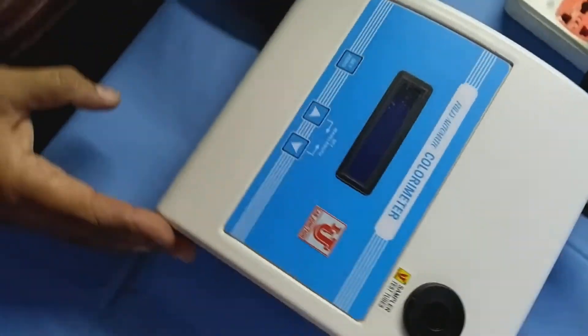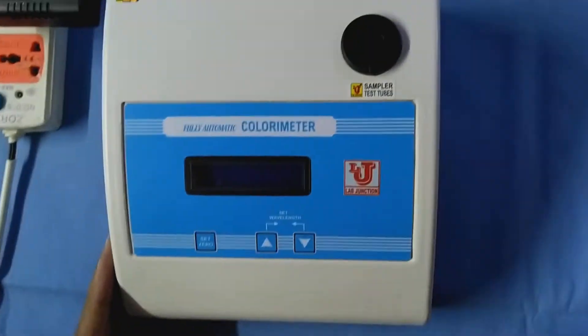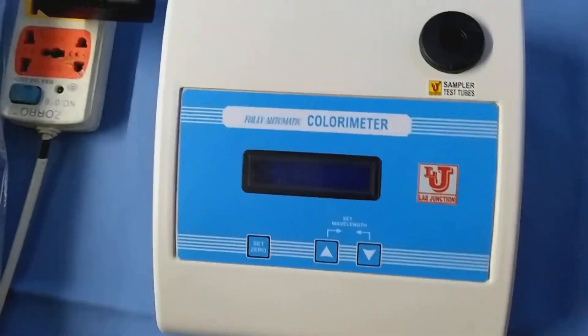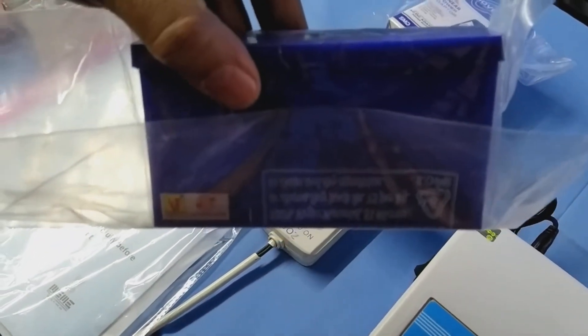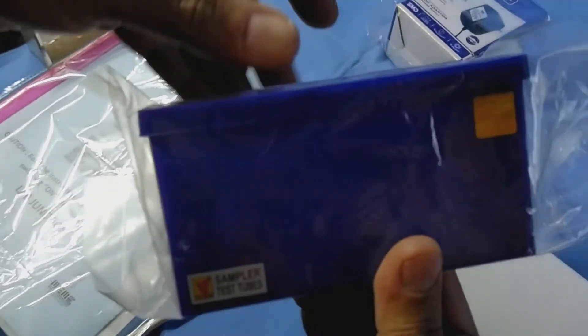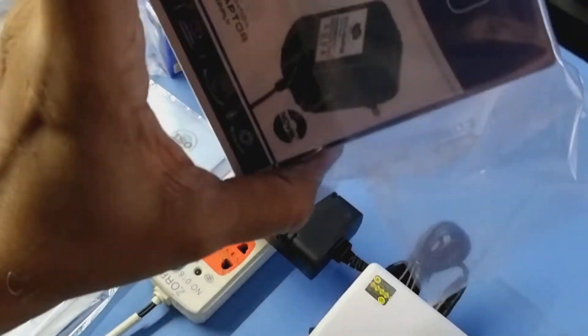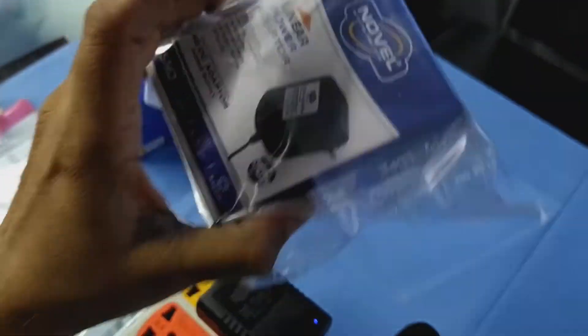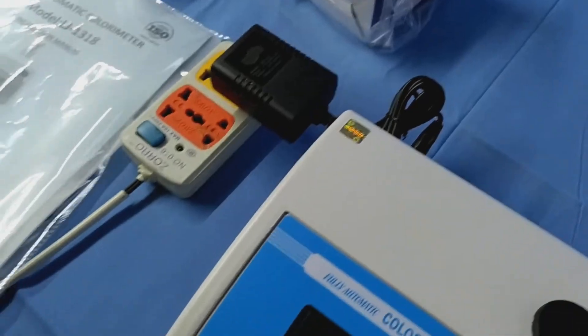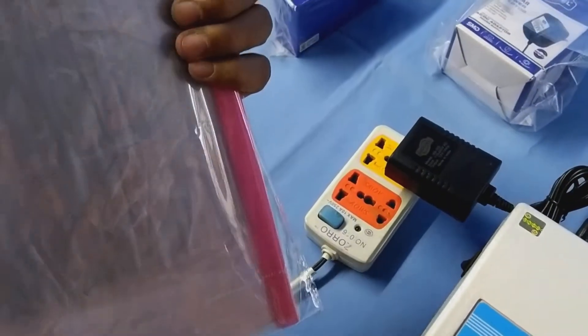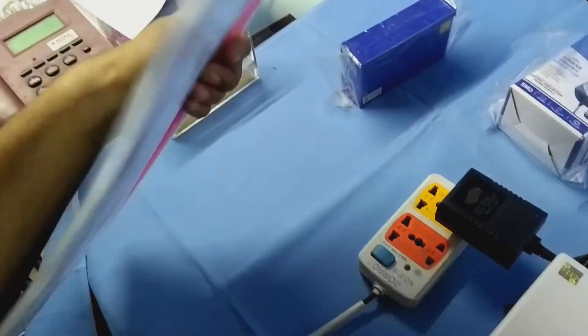With this colorimeter, accessories are test tubes 5 numbers with stand, flat bottom, 12 volt adapter for power supply, instruction manual, warranty card, dust cover.